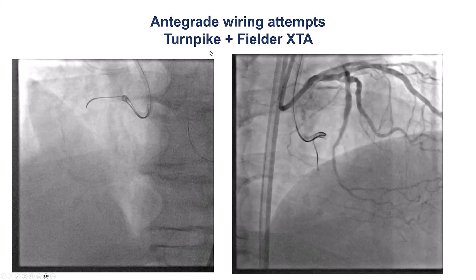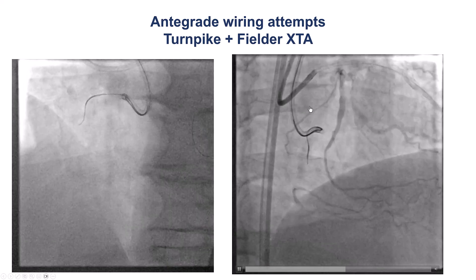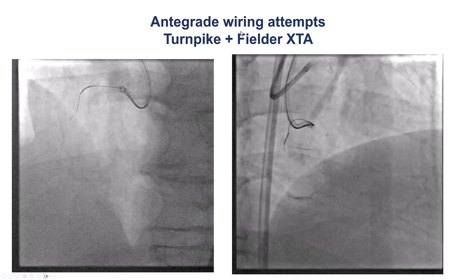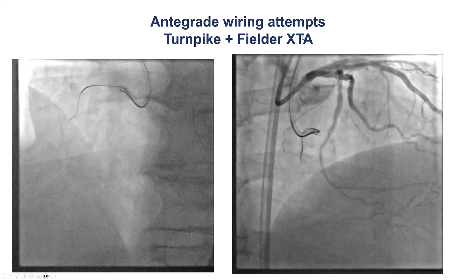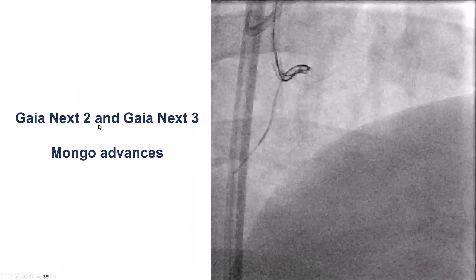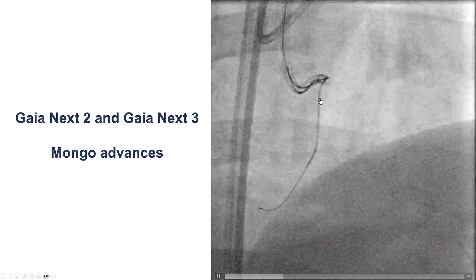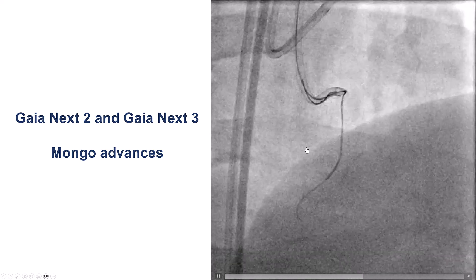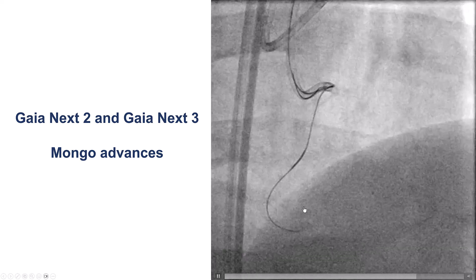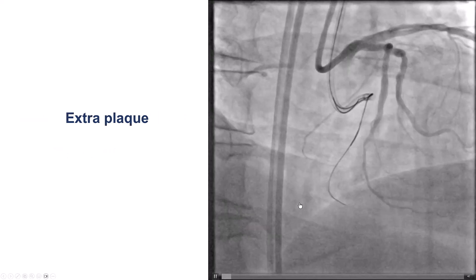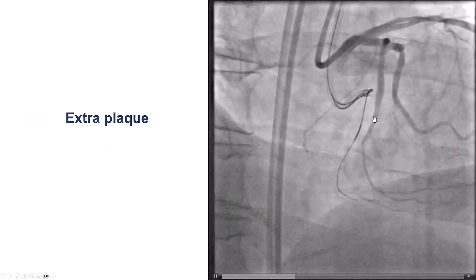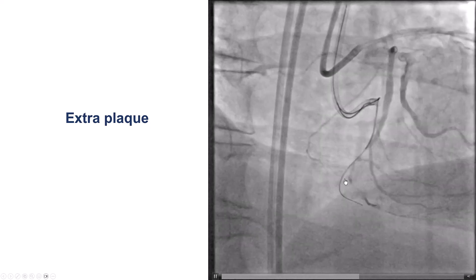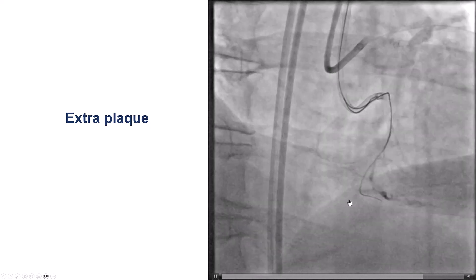We used a Turnpike microcatheter along with several guidewires, starting with a soft polymer-coated tapered wire, the Fielder XTA. We then tried a Gaia wire that did not progress. However, a Mongo wire did advance further distally. But a contralateral injection showed that the wire was actually into the extraplaque space.